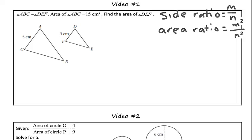So what we're going to do is we are going to use this area ratio to solve for the missing area of triangle DEF. To find our side ratio, we simply match our corresponding parts. So in this diagram, AC of 5 centimeters would correspond with DF of 3 centimeters. So this is the ratio of our sides.